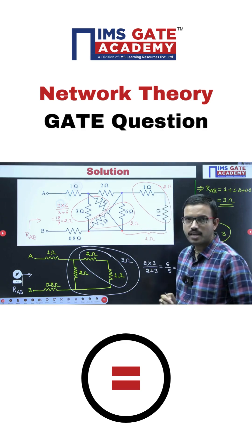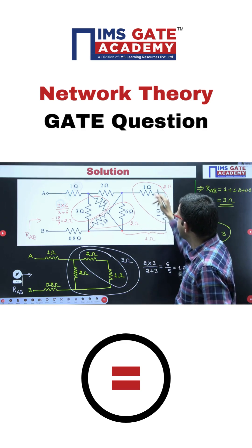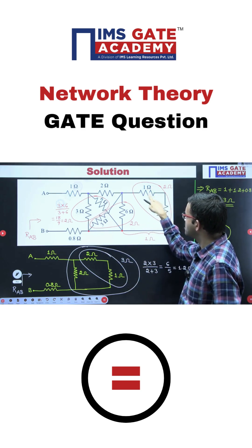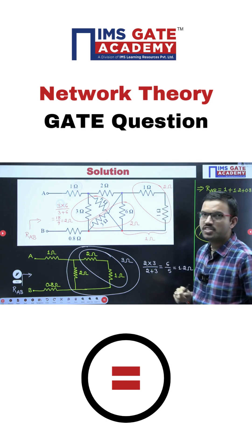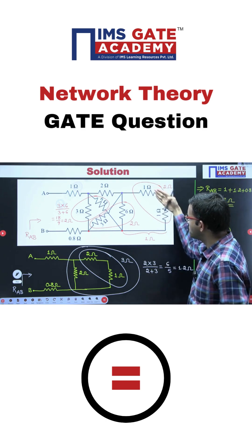Here also the same resistance 2 ohm. After that, here you are getting 1 plus 1 because these two are connected in series, giving you 2 ohm resistor. Now here you are having 2 ohm resistor and here 2 ohm resistor.